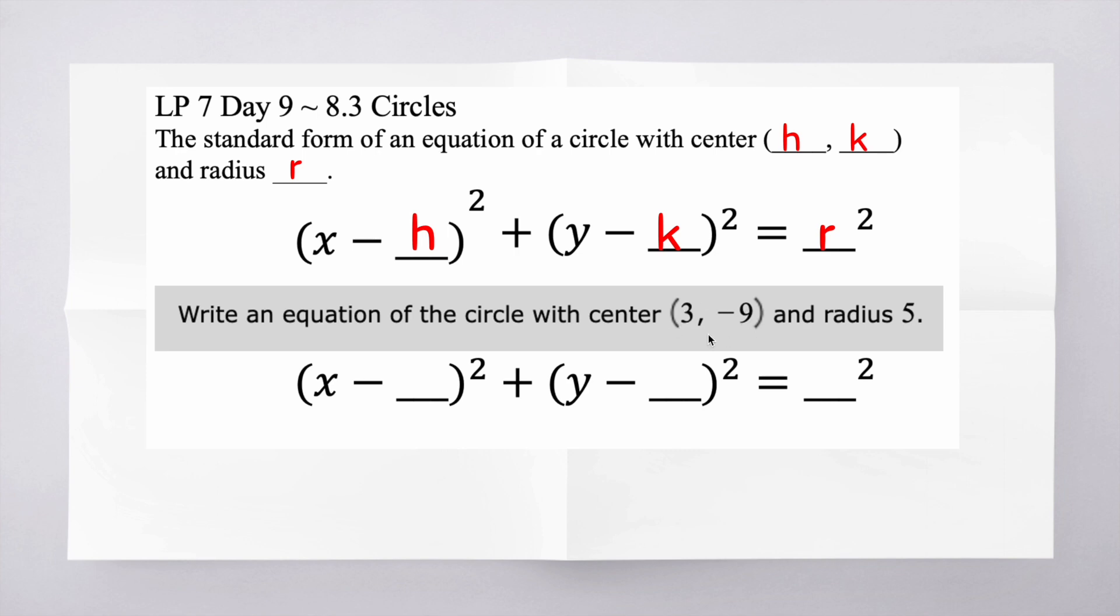If they give us the center of the circle and the radius, we can very quickly write this into an equation because I have (h,k) and I have r. So I just have to plug these in. So x minus h, which is 3 squared, plus y minus k squared equals r squared, so 5 squared.